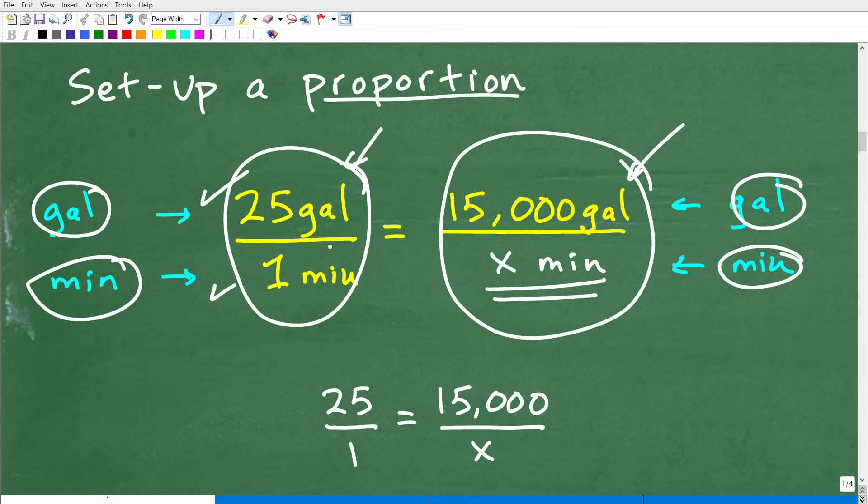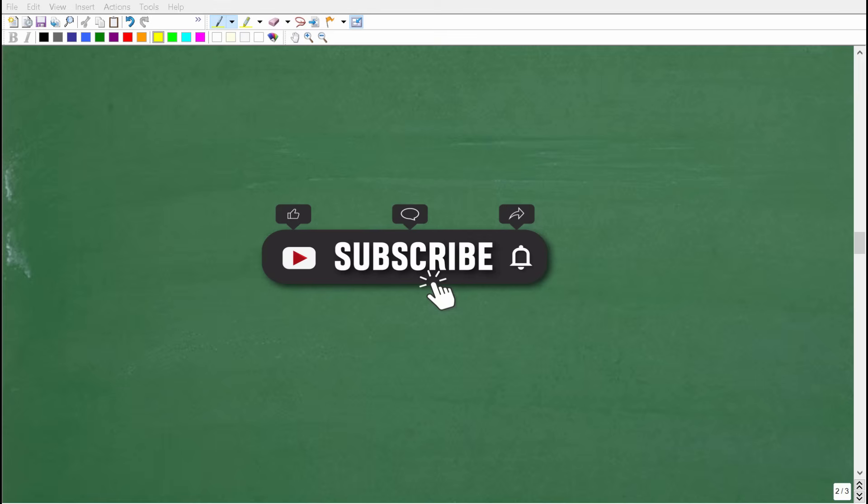Let's use this rate that we have, 25 gallons per minute. So we know this pump can pump out 25 gallons per minute. Notice where the units of measure are at. I have gallons in the numerator and minutes in the denominator. So set this equal to 15,000 gallons per X minutes. Gallons are in the numerator, and minutes we don't know. If this pump can pump out 25 gallons per one minute, it's proportional to the pump pumping out 15,000 gallons to this many minutes.